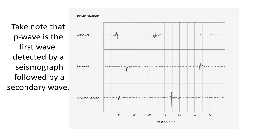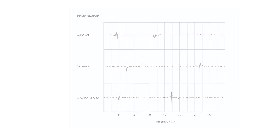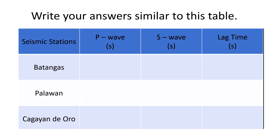Please try calculating the lag time using this hypothetical seismogram. Along the x-axis you have the time in seconds, and on the y-axis you have the three seismic stations. Draw a vertical line from the P wave or S wave down to the x-axis to get the arrival time. Write your answers in a table similar to the one shown.